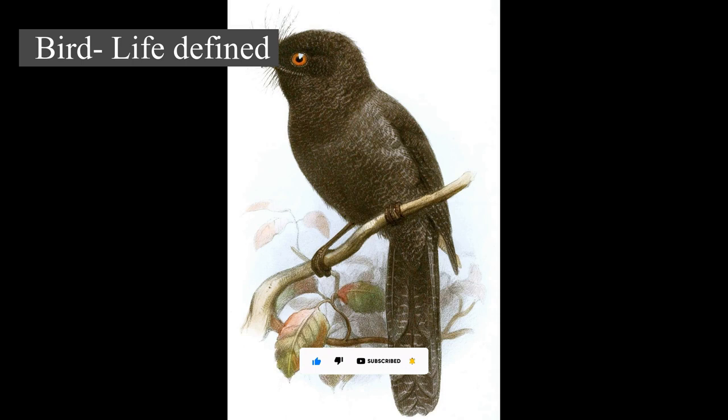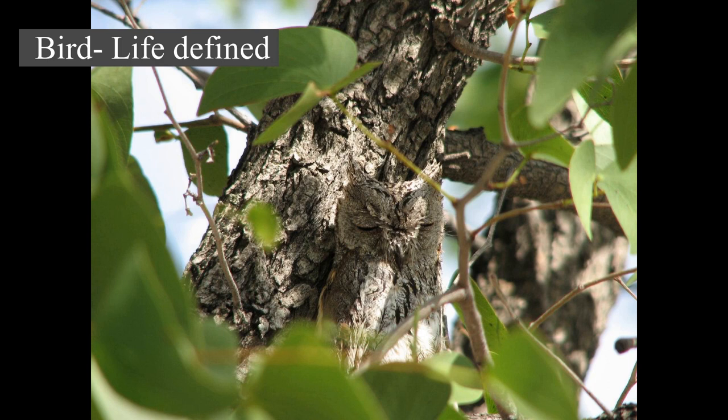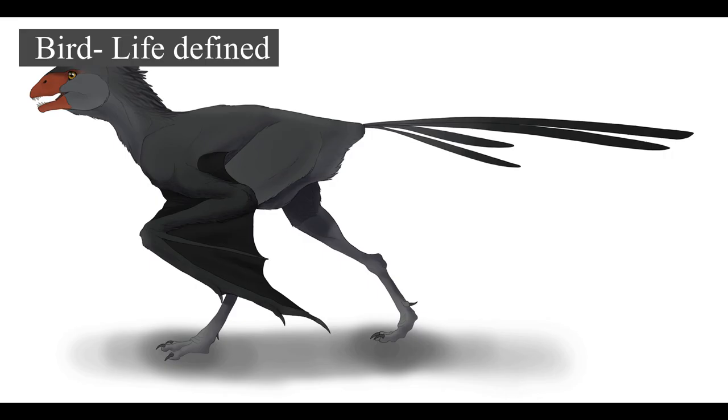Birds live worldwide and range in size from the 5.5 cm (2.2 in) bee hummingbird to the 2.8 m (9 ft 2 in) ostrich. There are about 10,000 living species, more than half of which are passerine or perching birds. Birds have wings whose development varies according to species; the only known groups without wings are the extinct moa and elephant birds.